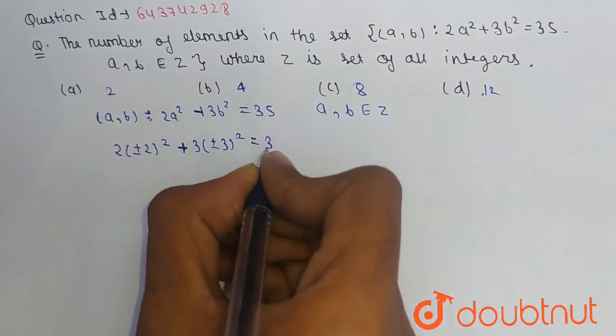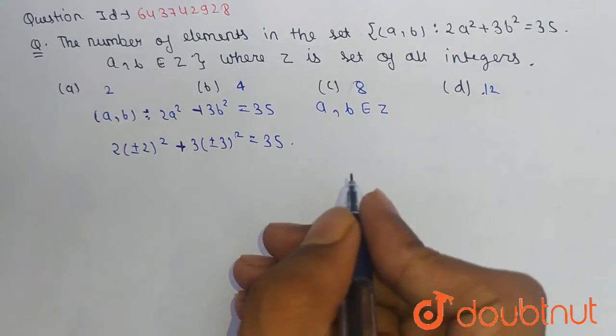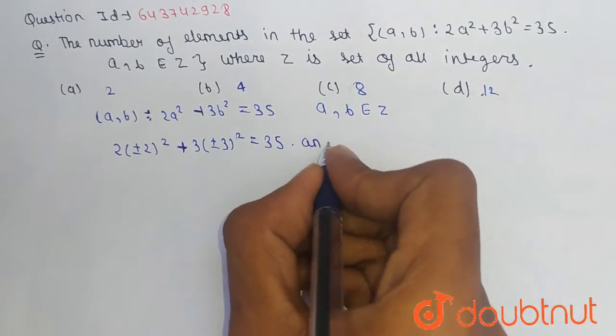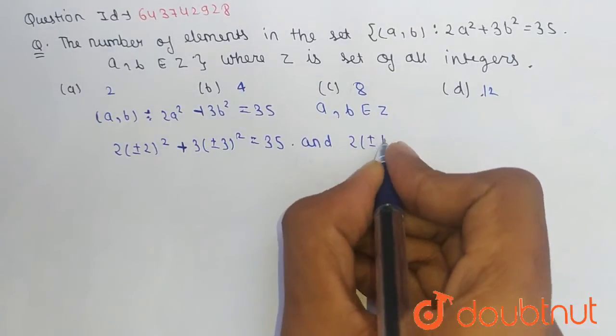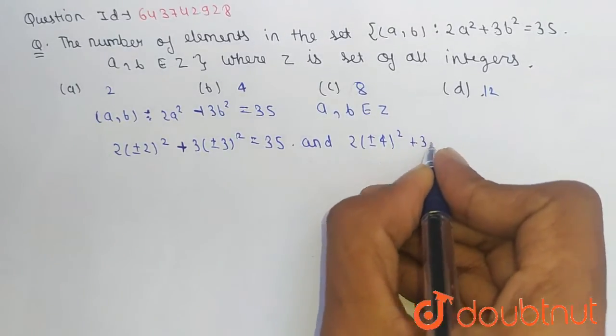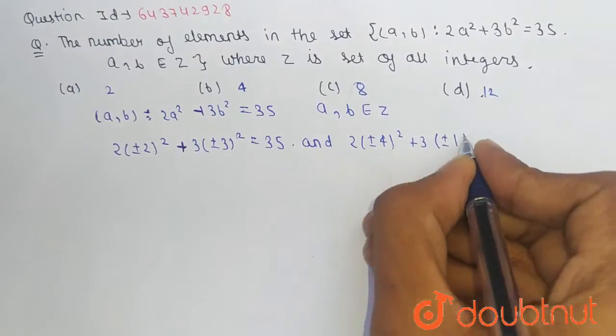And we also write 2(±4)² + 3(±1)² is equal to 35.